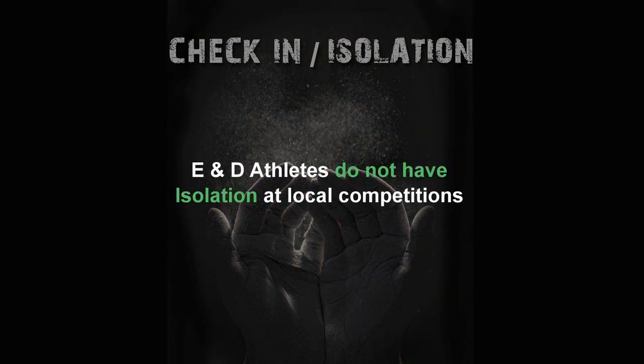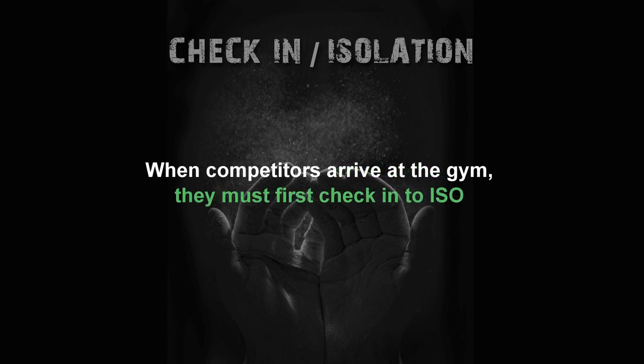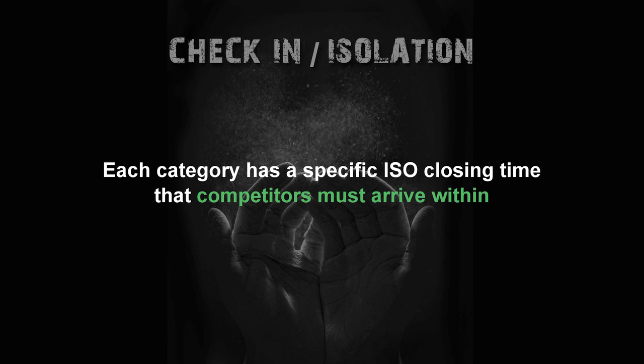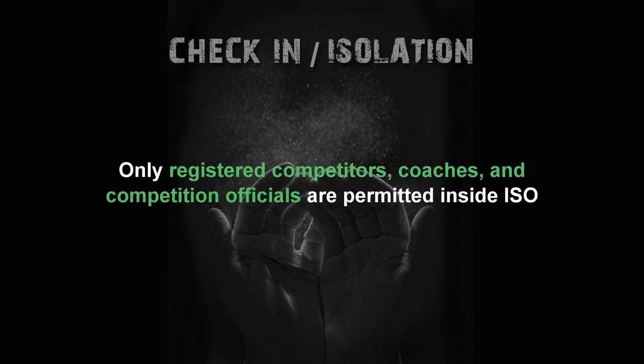E and D athletes do not have isolation at their local competitions. When competitors arrive at the gym, they must first check into the isolation zone, also known as ISO. Each category has a specific ISO closing time that competitors must arrive within. Only registered competitors, coaches, and competition officials are permitted inside ISO.